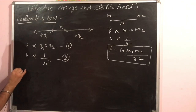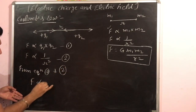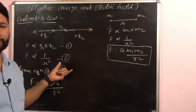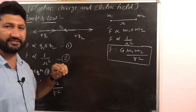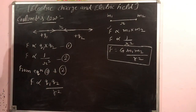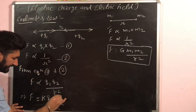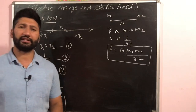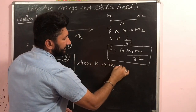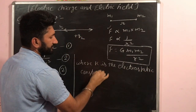From these two proportionality relations — force directly proportional to q1·q2 and inversely proportional to r² — we can write the definition of Coulomb's Law: the force between two charges is directly proportional to the product of their charges and inversely proportional to the square of the distance between them. To remove the proportionality constant, F = k·q1·q2 / r², where k is the electrostatic constant.